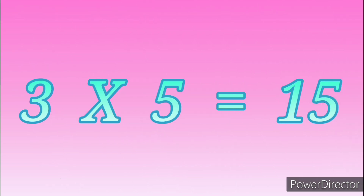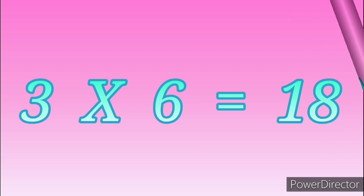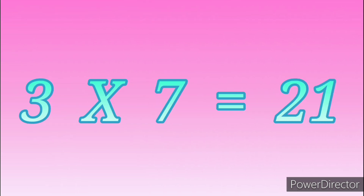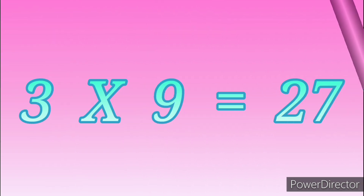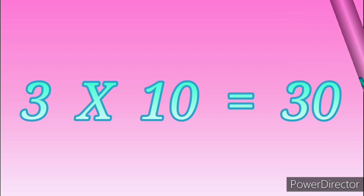Three-Fifteen, Three-Fifteen, Three-Fifteen, Three-Fifteen. Three-Sevens are twenty-one. Three-Eights are twenty-four. Three-Nines are twenty-seven. Three-Tens are thirty.